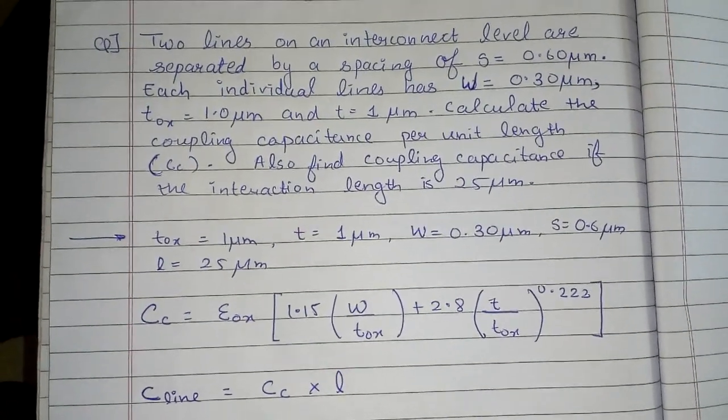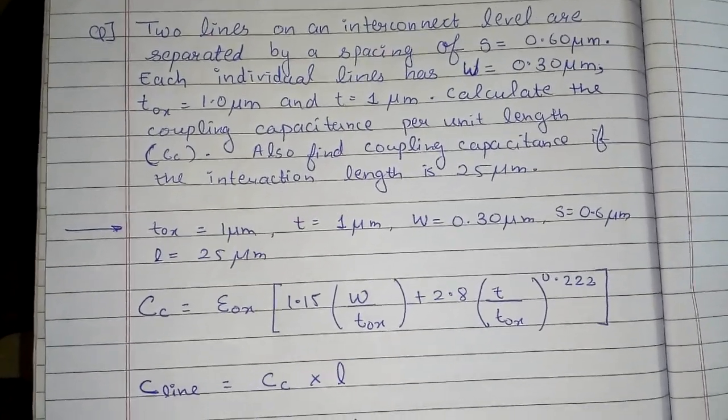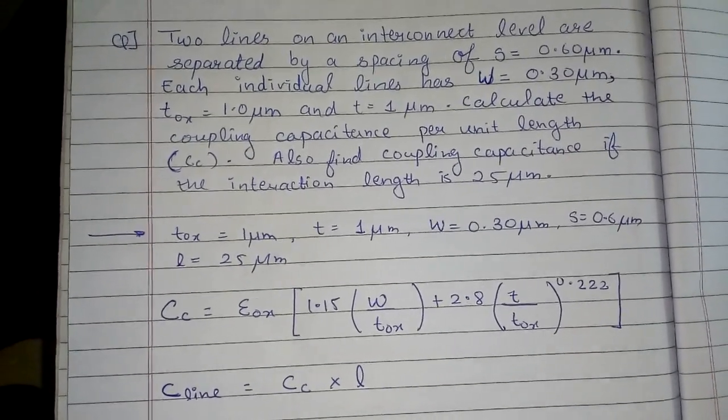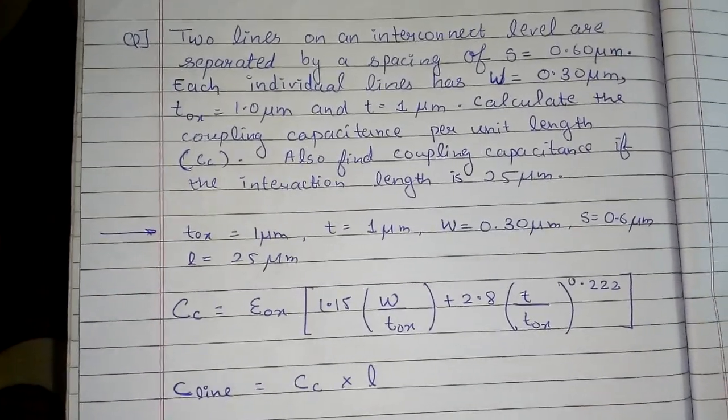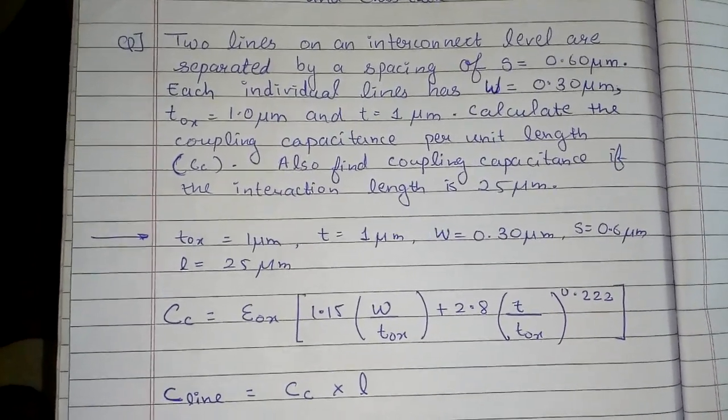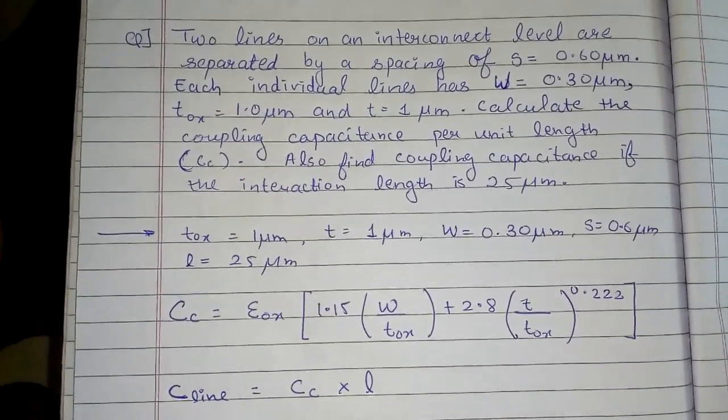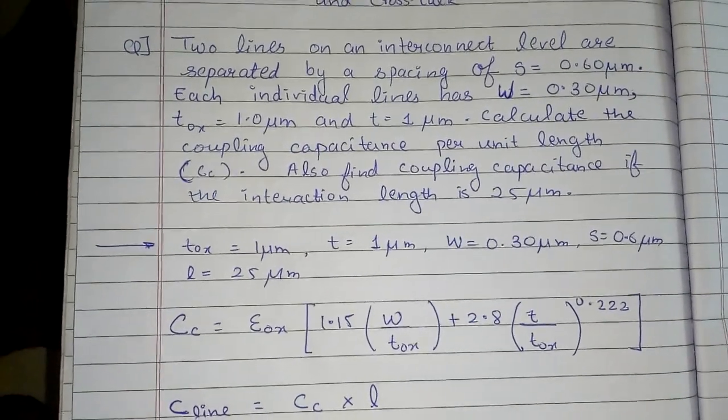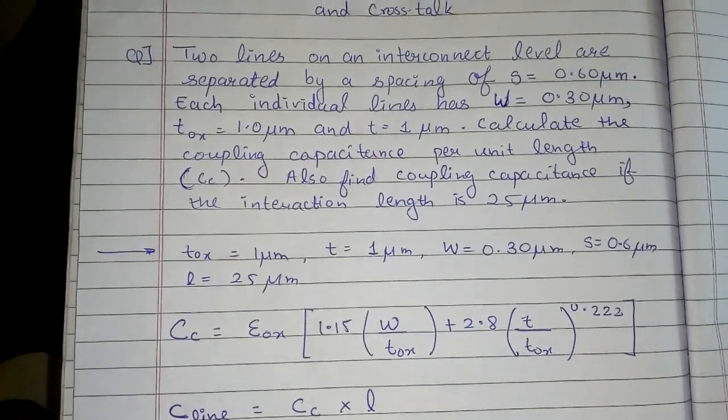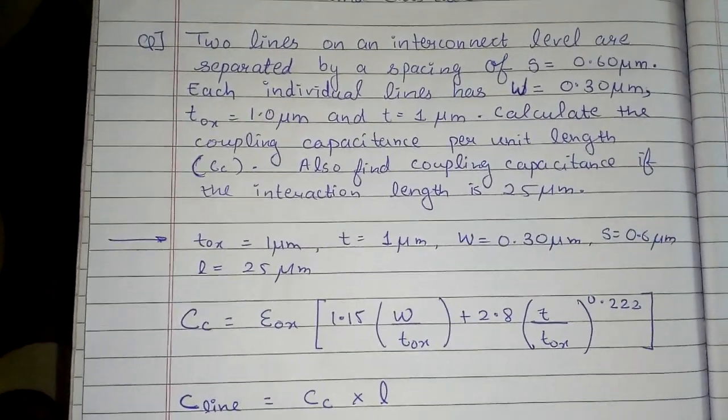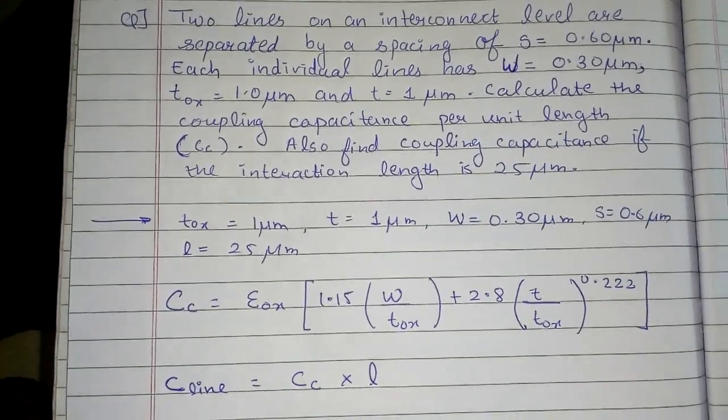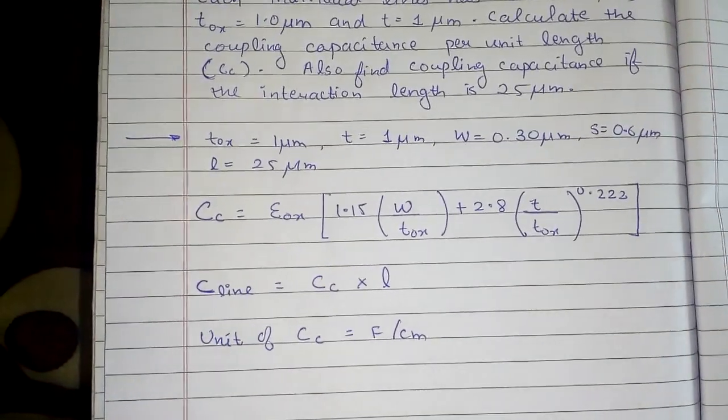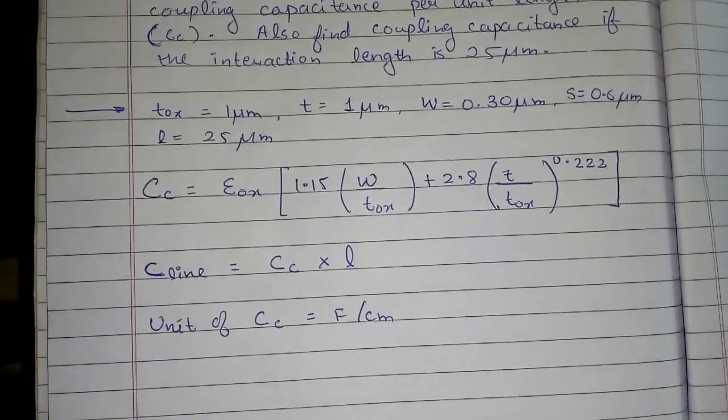of s = 0.60 micrometer. Each individual line has w = 0.30 micrometer, the thickness of oxide is tox = 1 micrometer, and t = 1 micrometer. Calculate the coupling capacitance per unit length, that is Cc. Also find coupling capacitance if the interaction length is 25 micrometers.